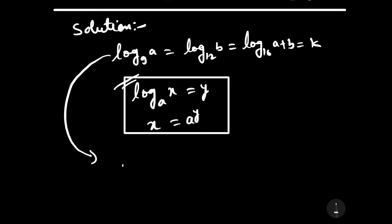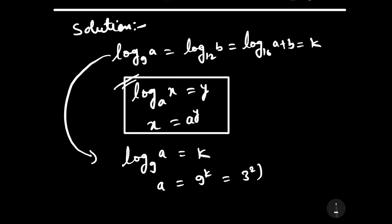Since log 9 base A equals k, then A equals 9 to the power k. Further, 9 can be written as 3 squared, so A equals 3 squared whole to the power k, which equals 3 to the power 2k.